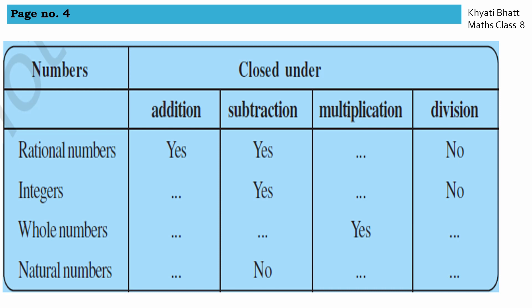Now let us go back to our example and fill in the table. For rational numbers: closed under addition — yes, subtraction — yes, multiplication — yes (2/3 times 4/3 equals 8/9, a rational number). For integers: closed under addition — yes (2 plus 3, 2 minus 3 always gives integers), subtraction — yes, multiplication — yes (2 times 3, 2 times minus 3 always gives integers). Division for integers — no.